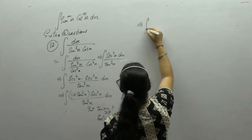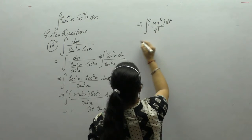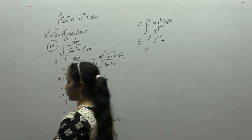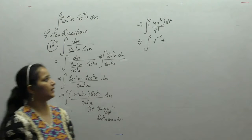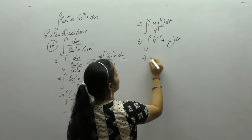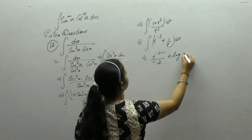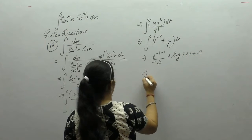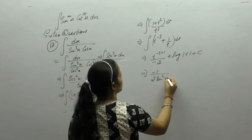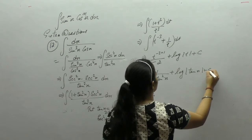We get 1 plus t square dt upon t cube. 1 upon t cube is t power minus 3, and t square upon t cube is 1 upon t. Integrating: t to the minus 3 gives t to the minus 2 upon minus 2. 1 upon t gives log of t plus c. Substituting back: minus 1 upon 2 tan square x plus log of tan x plus c.